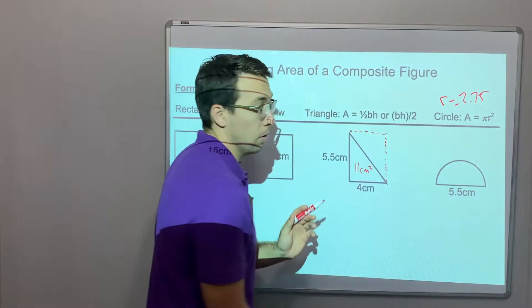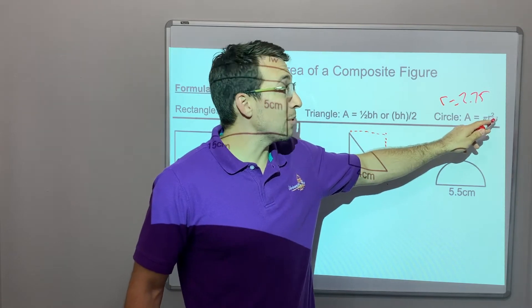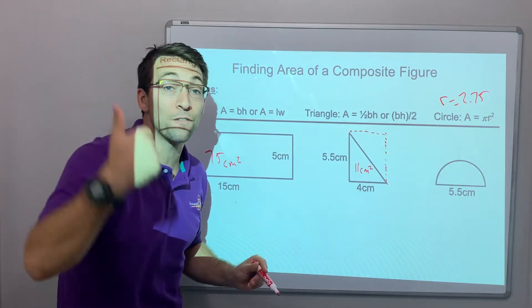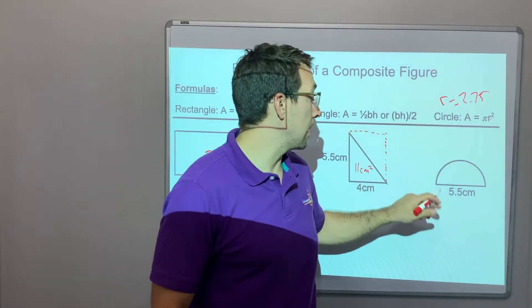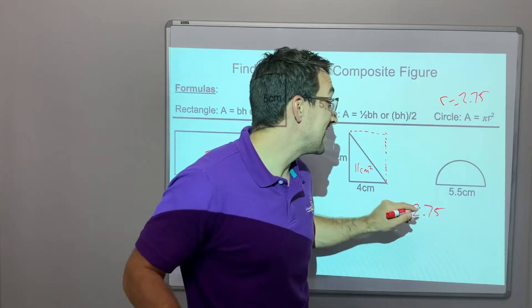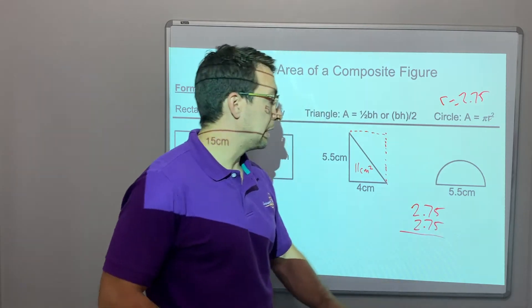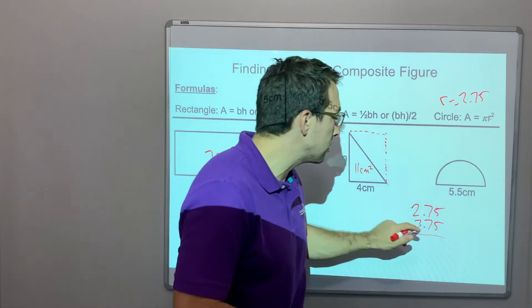Now we want to multiply the radius. We have to square. Remember, please excuse my dear Sally, exponents first. So what's radius squared? Okay. Radius is 2.75 times 2.75. This is going to be some math, right? And you don't have a calculator always, so we'll just do it.